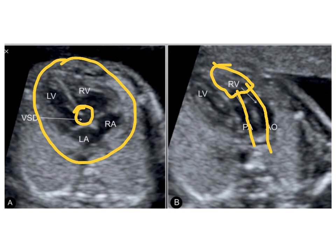This is a very complex defect. It's something you probably will not see very often, but it's good to know what it is. Remember: you want to see a big VSD if possible, and you want to see both vessels coming off the RV. If there's true double outlet right ventricle, it'll be pretty obvious that both vessels are oriented toward the RV, and any aortic override will be minimal.